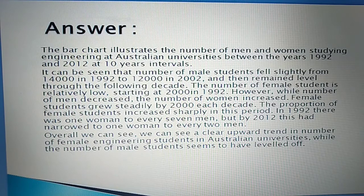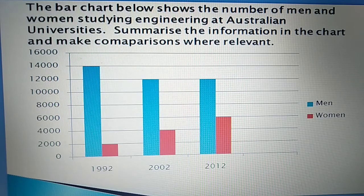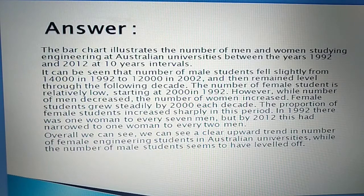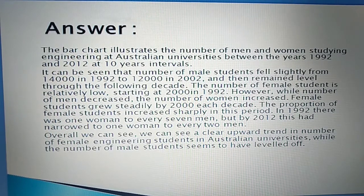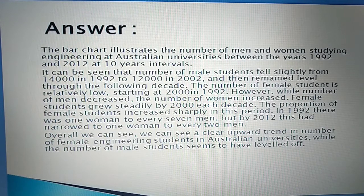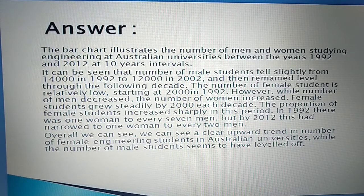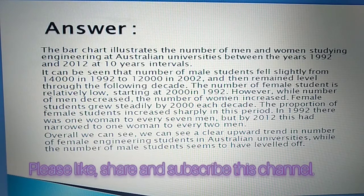In 1992, there was one woman to every seven men. But by 2012, this had narrowed to one woman to every two men — a 50-50 ratio. So overall, we can see a clear upward trend in the number of female engineering students in Australian universities, while the number of male students seems to have leveled off.